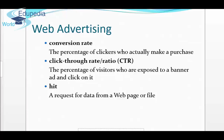Click-through rate or CTR is the percentage of visitors who are exposed to a banner ad and click on it — meaning their privacy settings are not very high and they are open to receiving ads, clicking on them, and even going toward purchase. A hit is a request for data from a web page or file. These are all interchangeable but distinct terms describing behaviors people have with advertisements on websites.